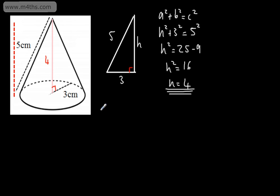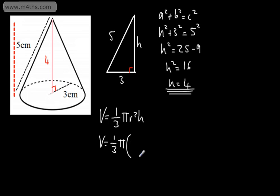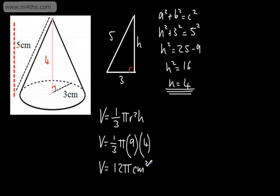So we can now say that the volume, using the formula one-third pi r squared h, is going to be one-third pi times r squared, which is 3 squared equals 9, multiplied by the height of 4. If we wanted an exact answer, 9 over 3 is 3, so that gives us 12 pi centimeters cubed. If that is an exact answer, you can find the decimal answer by putting it into a calculator and hitting the S to D button.